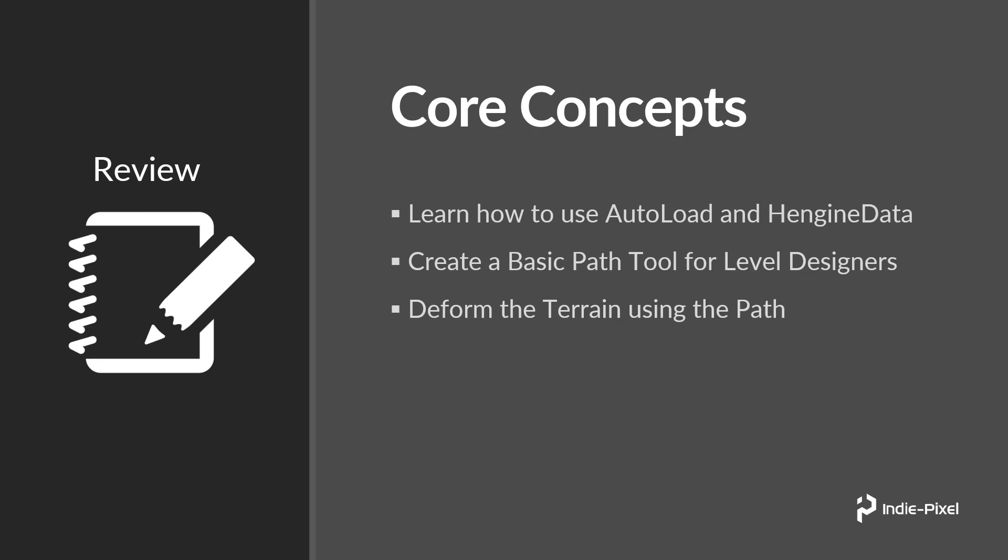Then we're going to deform the terrain using that path. I really want to show off how we can utilize what they call spatial partitioning — specifically partitioning by bounds — which will allow us to only cook areas of our level where things have changed. We're also going to clear the foliage using that same spatial partitioning by bounds.